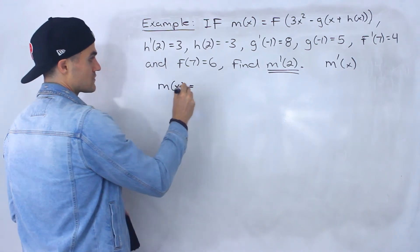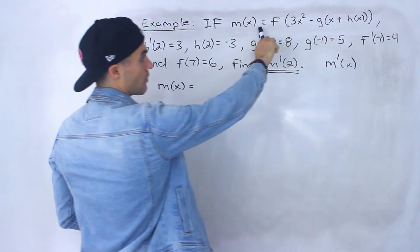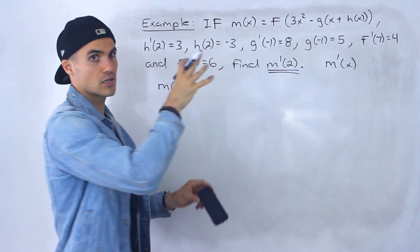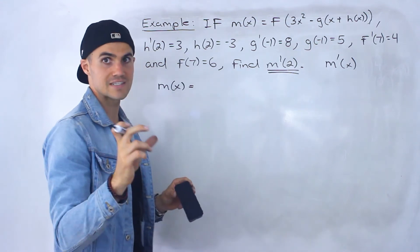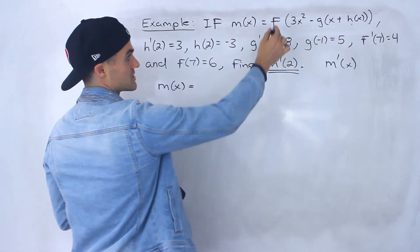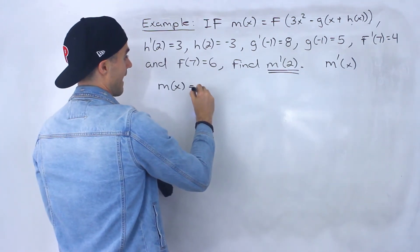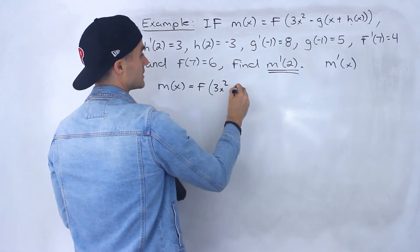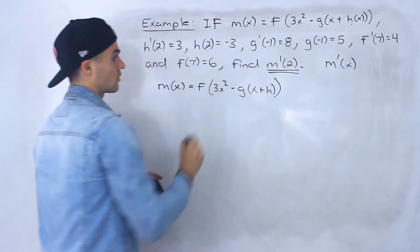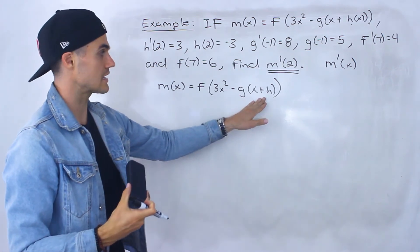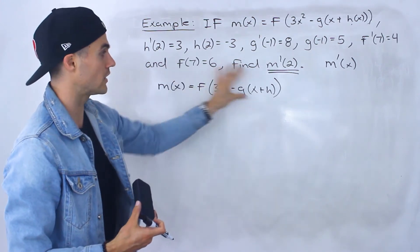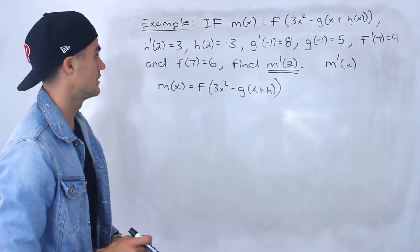As I did in previous videos, I'm going to rewrite this. Whenever I have a g, an f, or an h, instead of writing f of x, g of x, or h of x, I'm just going to write the single letters. The only one we have to switch is h of x — f and g are already by themselves. So we'll have f of (3x squared minus g of (x plus h)). I like to do that — it makes things a little clearer, and there's already a lot going on.